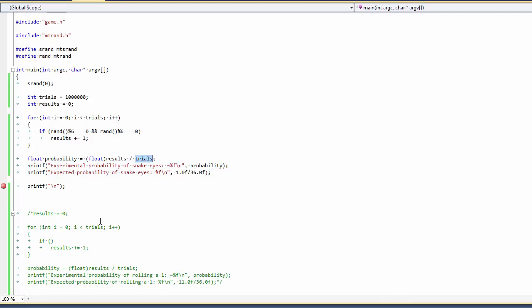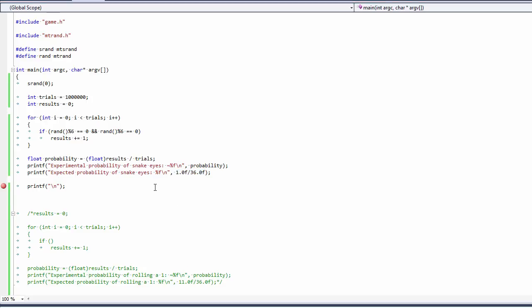And we're going to see how many positive results we got. We're going to divide it by the total number of trials we did, which is a million, and we're going to compare that to our expected result of one divided by 36. So let's see how that does.